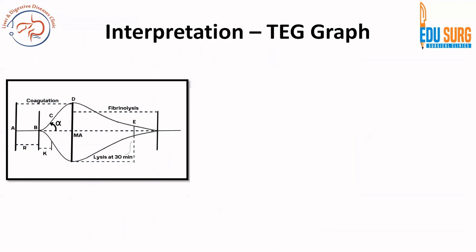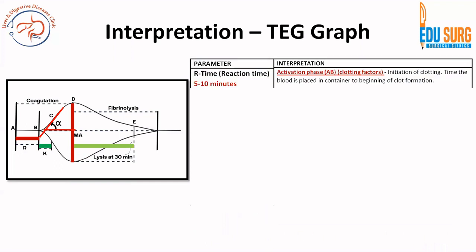This is the TEG graph. There are some important markings to go through one by one. The distance between A and B — from the point where blood is put in the cup to where it starts showing changes in viscoelasticity — is the R or reaction time. Between B and C is the K time or kinetics time, the clotting time. The two red lines form the angle known as the alpha angle. The maximum amplitude of clotting is shown at point D, or MA. Then the clot starts to lyse — the fibrinolysis period — and we measure the clot lysis index at 30 minutes, that is at point E.